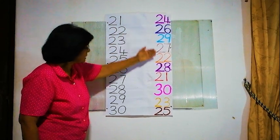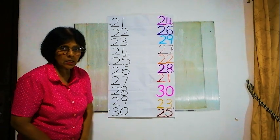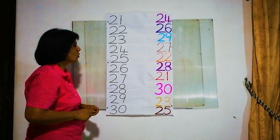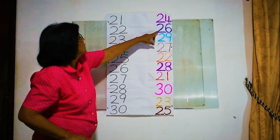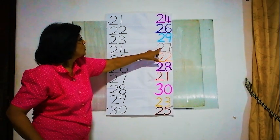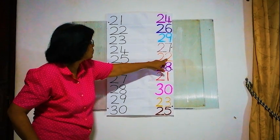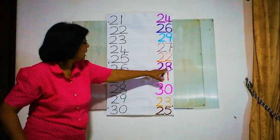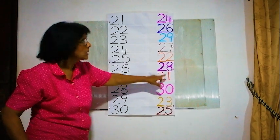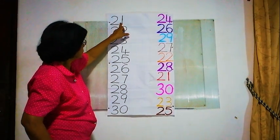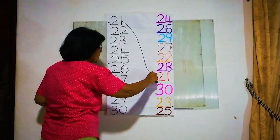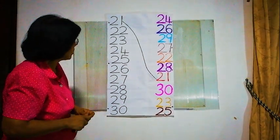Now, here is number 21. From this side we'll find number 21. Searching through: 24 — no, 26 — no, 29 — no, 27 — no, 22 — no, 28 — no. Here — 21! Correct! We are matching 21 and 21. The next number is 22.